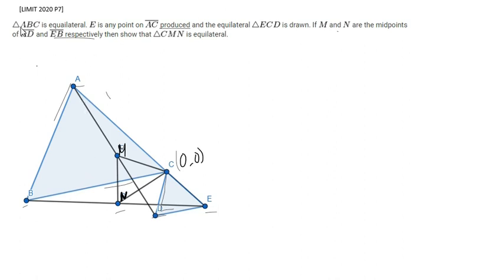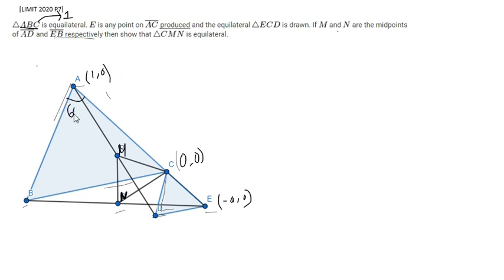Also, let's set the side length of ABC to 1. So the side length of ABC is 1. That makes B at (1, 0) on the x-axis, and A is going to be at (-a, 0). We are taking the side length of CDE as a, so D is at (-a, 0). Since this angle is 60 degrees, you can calculate the coordinates: B is at (1/2, √3/2).